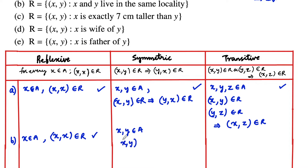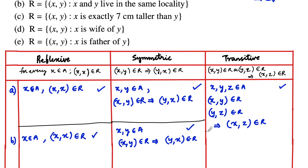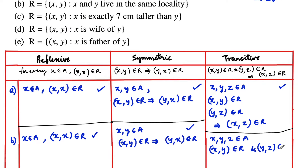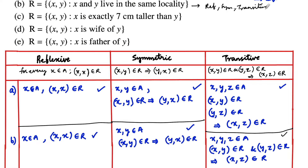For symmetric: if two persons belong to the same locality, if (x, y) belongs to r, then we can also say that y and x also belong to the same locality, so it is symmetric. For transitive: consider three persons x, y, z belonging to A. If x and y live in the same locality and y and z live in the same locality, then x and z will also live in the same locality. So this relation is transitive, and hence it is reflexive, symmetric, and transitive — we can also call it an equivalence relation.